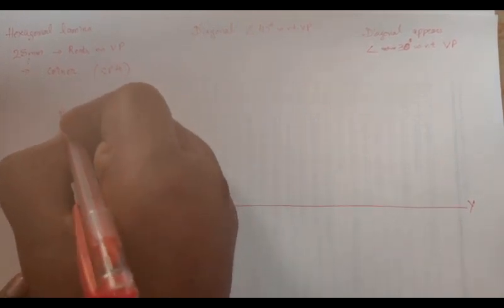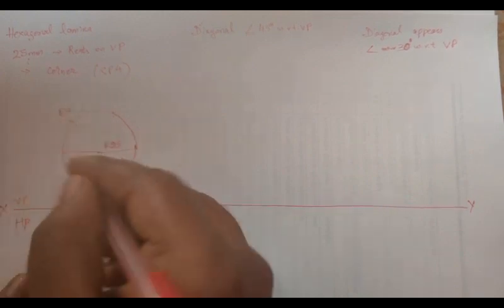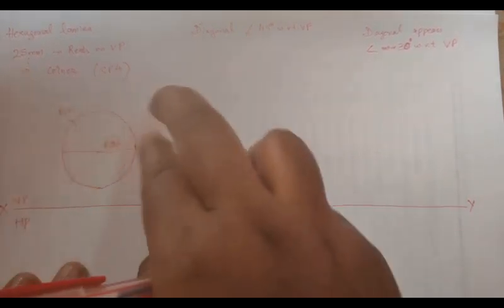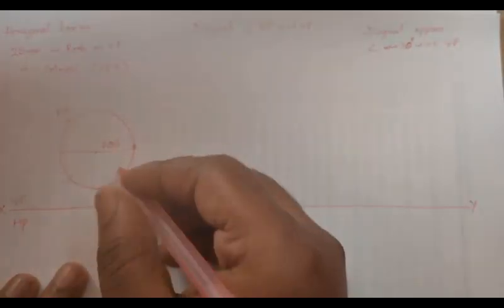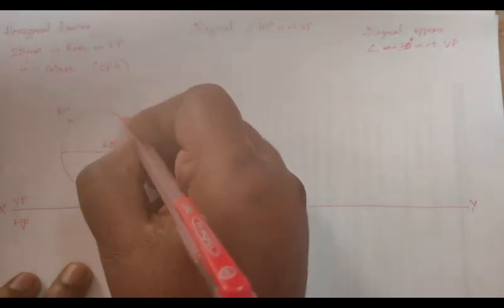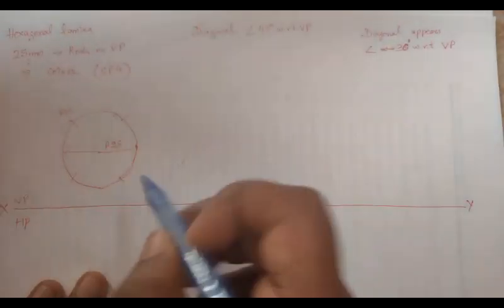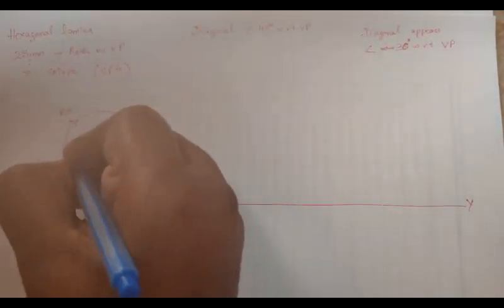We're going to join this by thick lines. Line thickness is 0.5, as we're going to do it in the solid edge software. So we're going to give the dimensions.